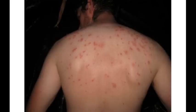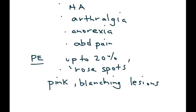Rose spots are pink blanching lesions — here is a picture of a child with these rose spots who has typhoid fever, and this is an adult with rose spots. They're quite characteristic, and the fact that they're blanching is important: when you stretch the skin apart, the rose spot will slightly disappear — that's what blanching means.